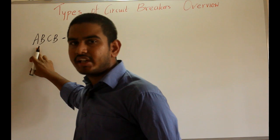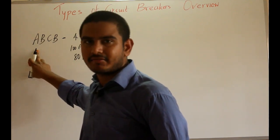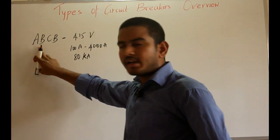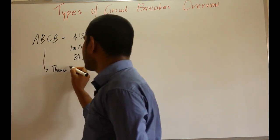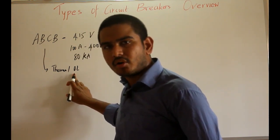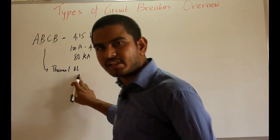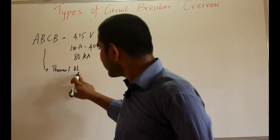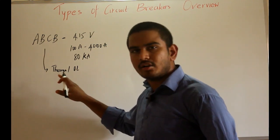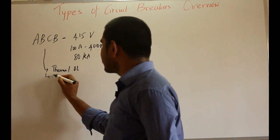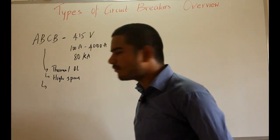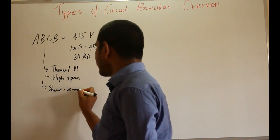This air break circuit breaker has inbuilt thermal overload release, meaning the release is due to the heating caused by the overload. So we do not require a relay for the tripping signals because it has inbuilt thermal overload release. It also has high speed of operation on short circuit conditions.